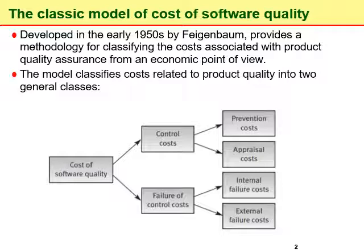Internal failure activities such as design reviews, software tests, and acceptance tests are performed before the software is delivered to the customers. External failure costs include all costs of correcting failures detected by customers or the maintenance team after the software system has been installed at the customer site.